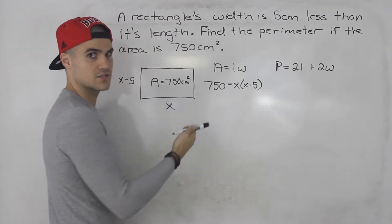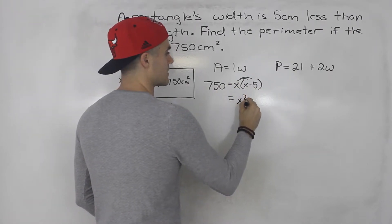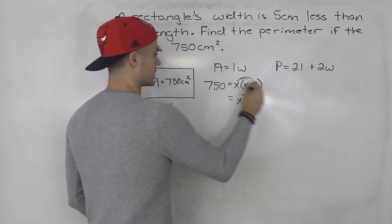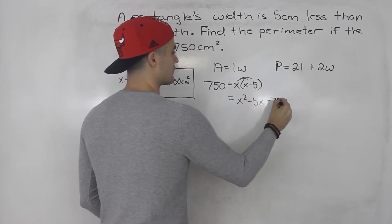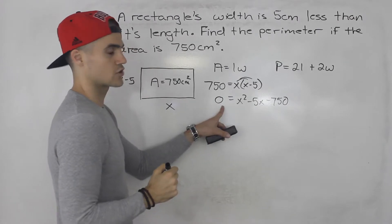Notice how this is just a quadratic equation. So if we expand on the right side and then bring this 750 over so it becomes minus 750, and then we have zero here. This is just a quadratic equation.